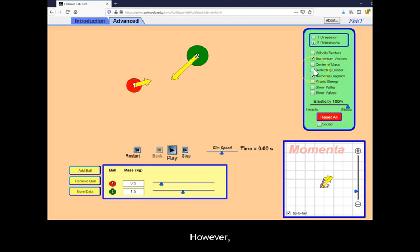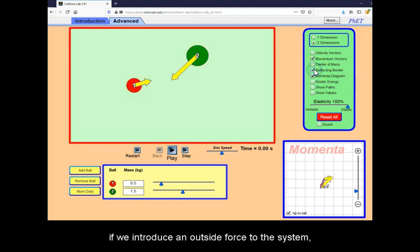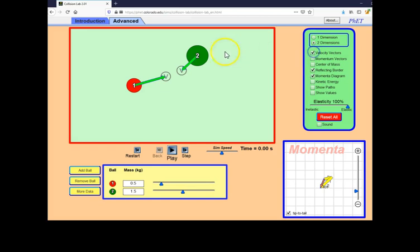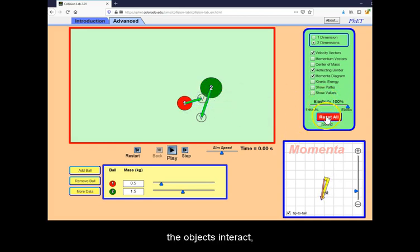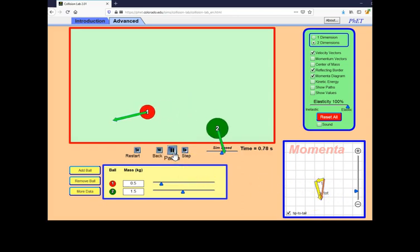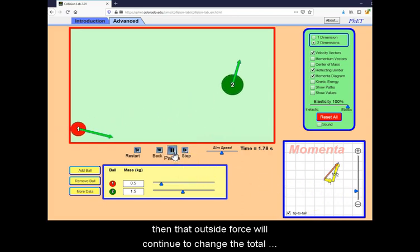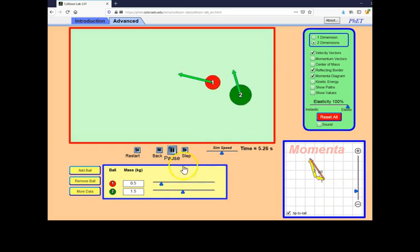However, if we introduce an outside force to the system and make the objects interact first with each other but then with it as well, then that outside force will continue to change the total momentum of the system.